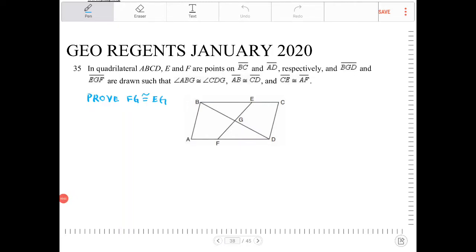In quadrilateral ABCD, E and F are points on BC and AD, respectively, and BGD and EGF are drawn such that angle ABG is congruent to CDG, AB is congruent to CD, and CE is congruent to AF.